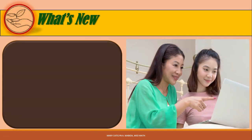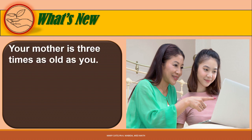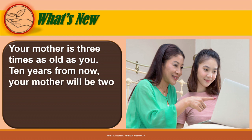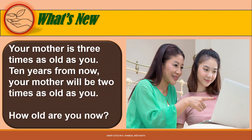Now here is a situation. Your mother is 3 times as old as you. Ten years from now, your mother will be 2 times as old as you. How old are you now? How do you think we can get the answer? Let us solve a problem which involves systems of linear equations in two variables using the three methods.